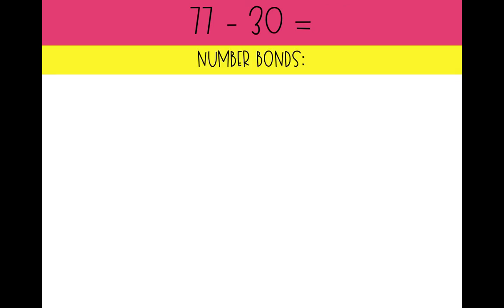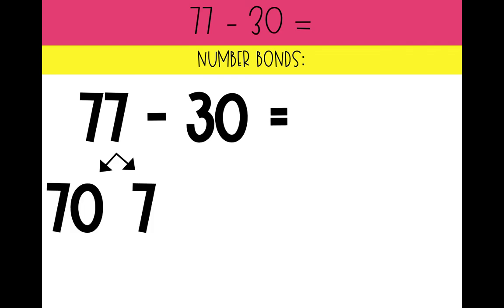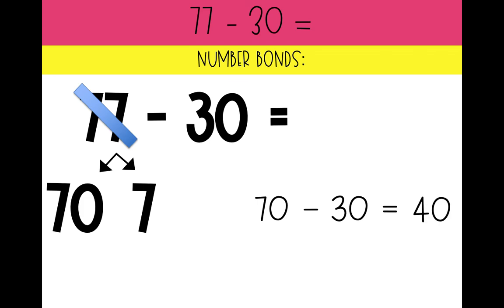Let's try the same problem using number bonds: 77 minus 30. Which number can we break into its tens and ones? 77. What tens and ones are we breaking 77 into? 70 and 7. What do we need to subtract first? 70 minus 30. What is 7 tens minus 3 tens? 4 tens, or 40. Remember, we want to add the ones that are left. What is 40 plus 7? 47. So 77 minus 30 is 47.